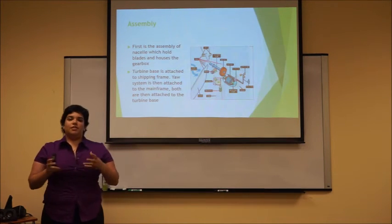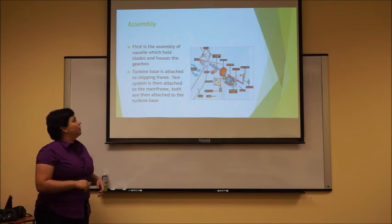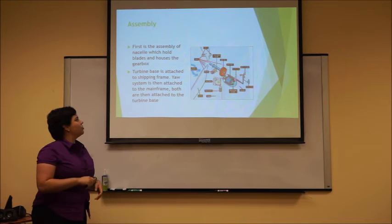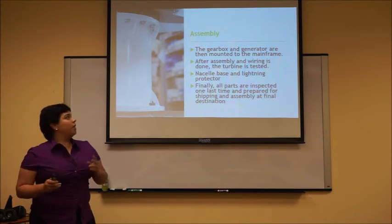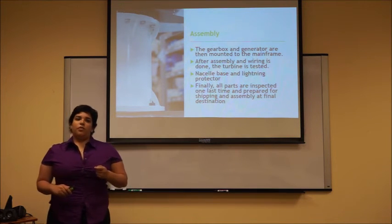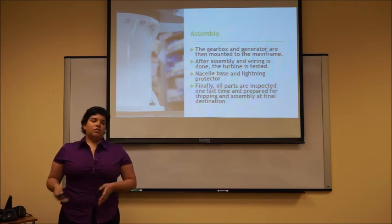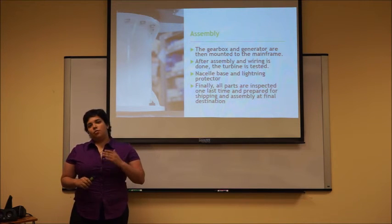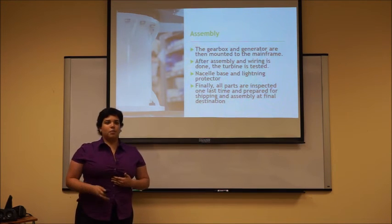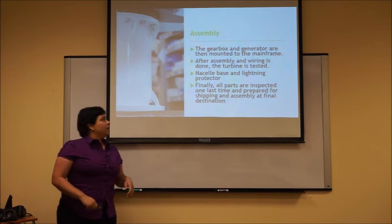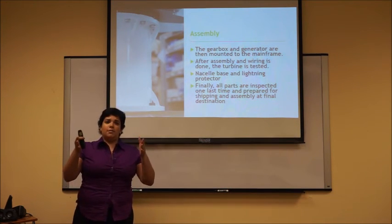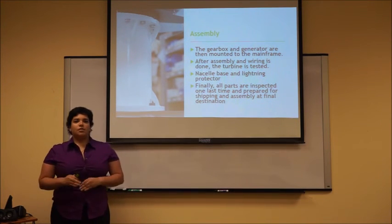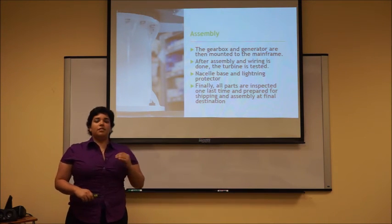The first step in assembly is the nacelle, which holds the blades and houses the gearbox. The turbine base is then attached to the shipping frame, and the yaw system is attached to the mainframe; both are then attached to the turbine base. The gearbox and generator are then mounted on the mainframe, and the generator converts the wind's kinetic energy into electrical energy for the grid. After assembly, wiring is done and the turbine is tested in a dynamometer over 151 points. Once testing is passed, it is sent for shipping. The nacelle also holds a lightning protector, and after all protective covers are placed, it undergoes a final inspection over 670 points.